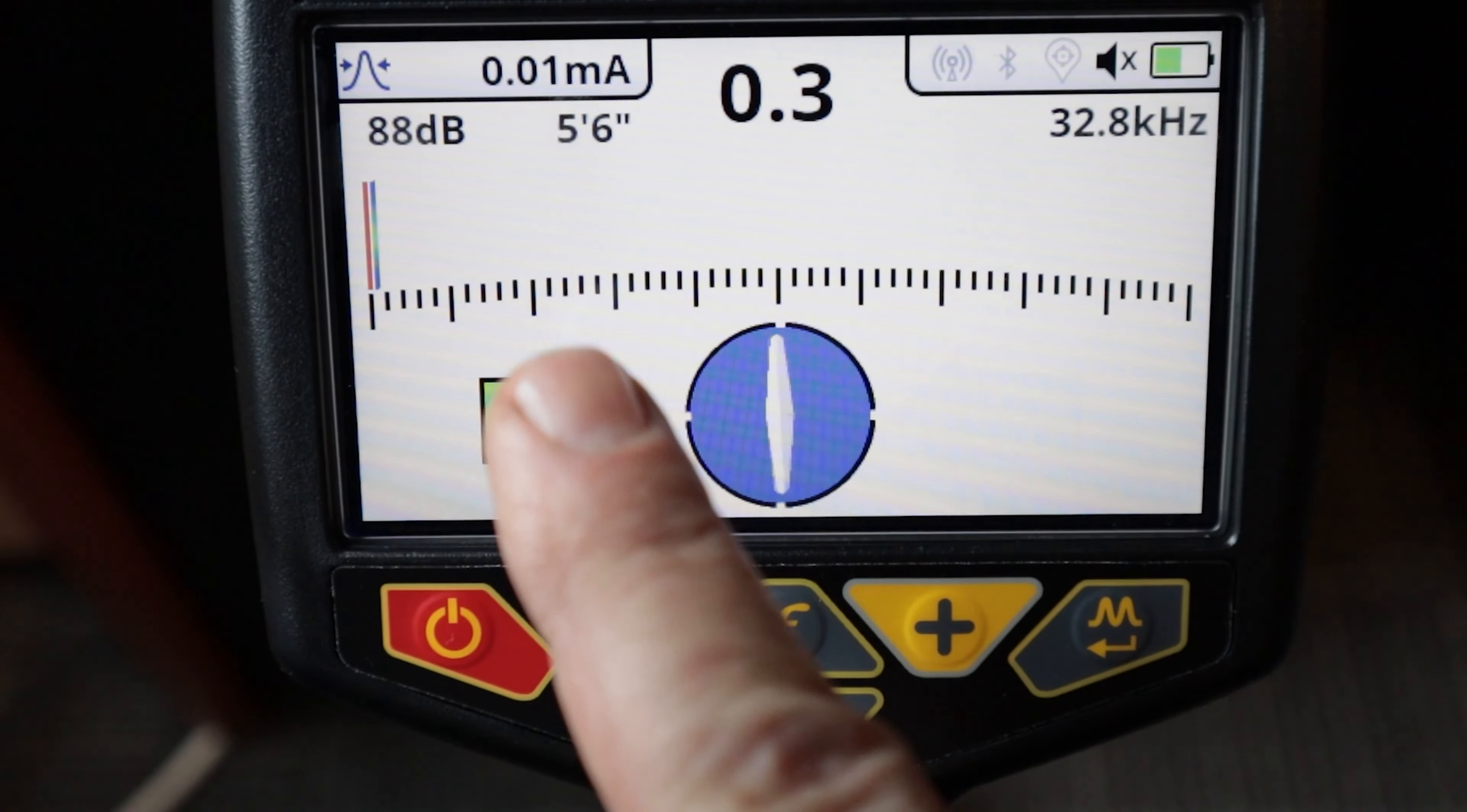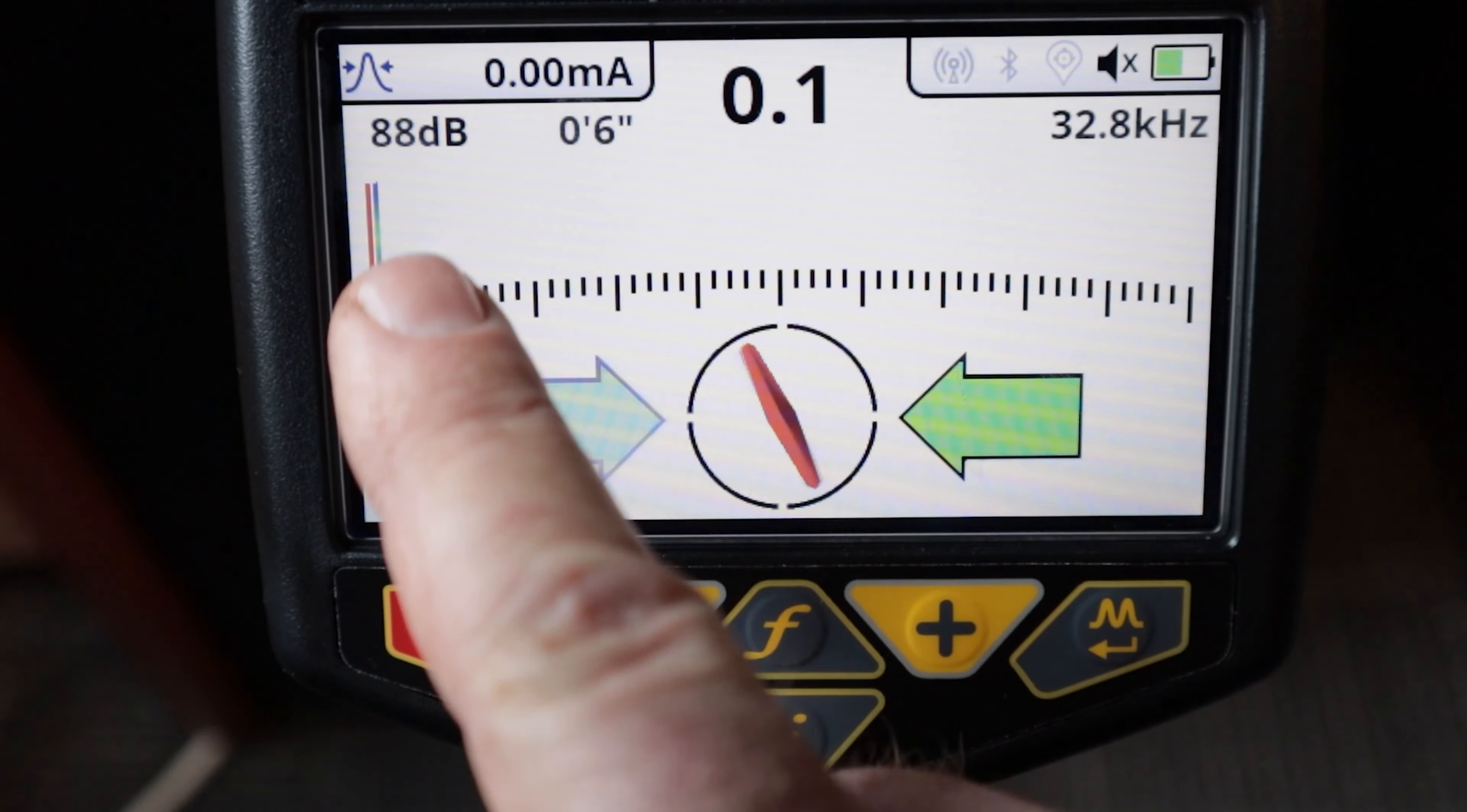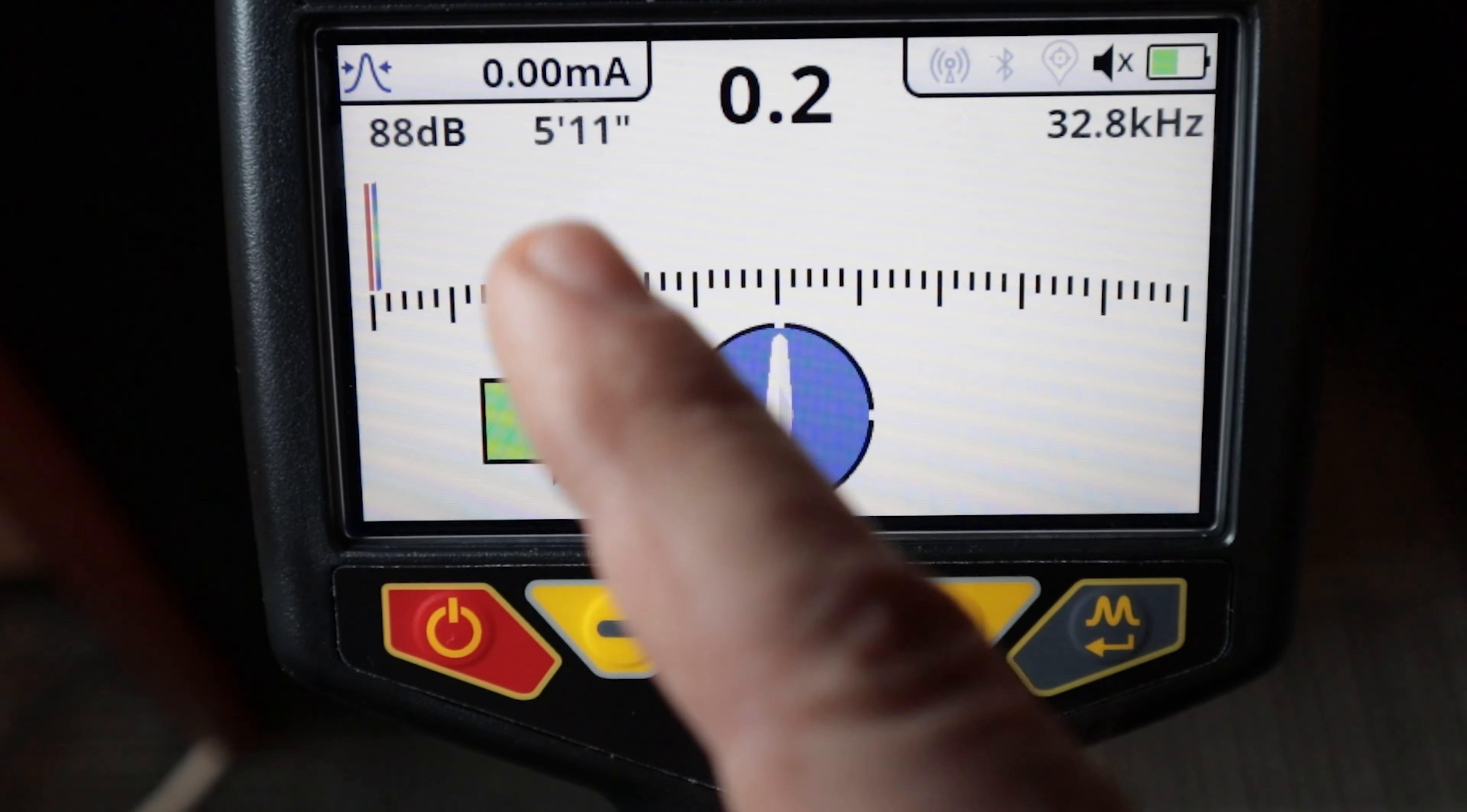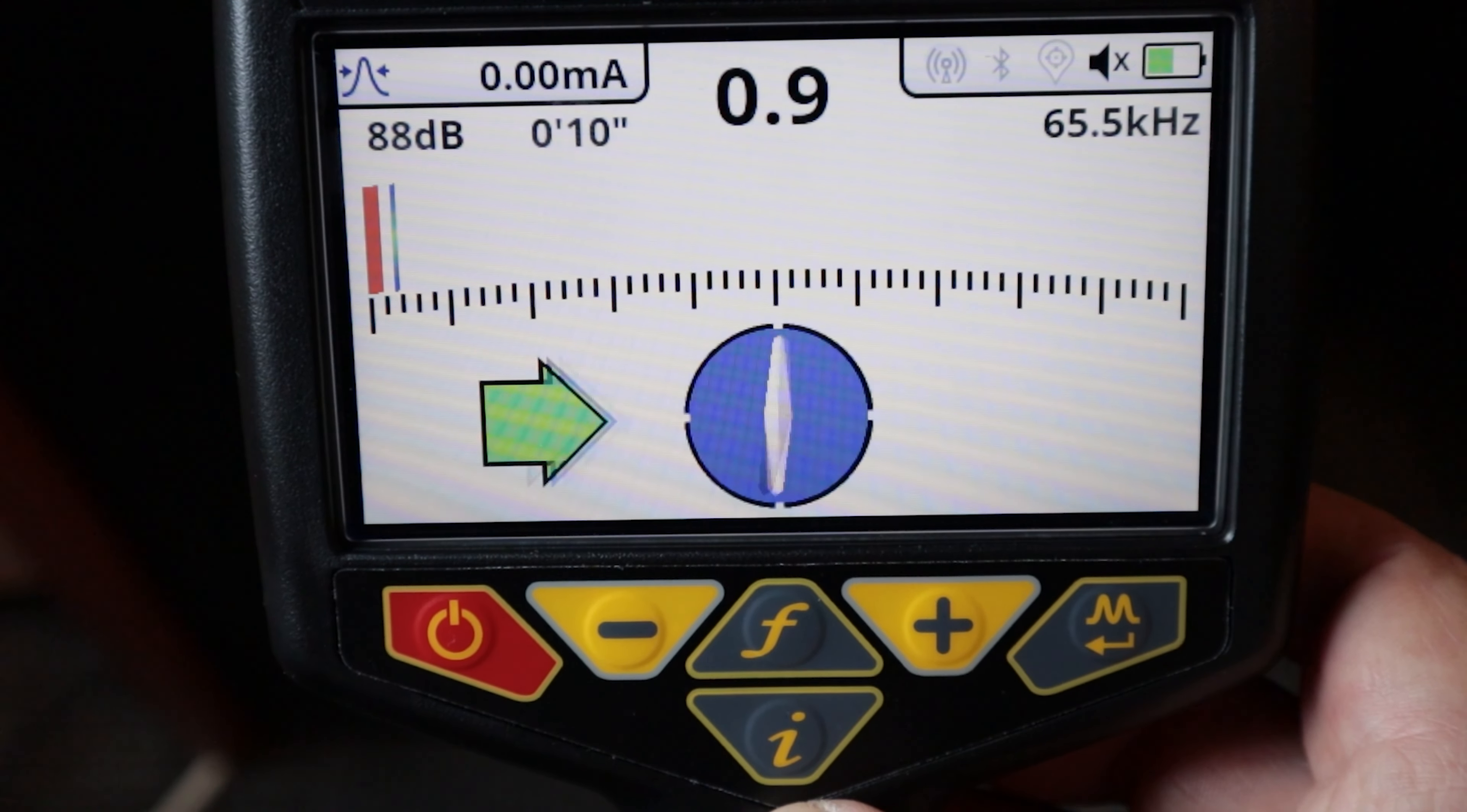Up here is my decibels and that basically is how sensitive I have my coil set to look for the utility that I'm actually trying to find. I don't increase or decrease the actual signal that's being put out, that is referenced by my milliamps. This is just how sensitive I have the coils. An example is if I had something that was quite deep, say six feet deep in the ground, I would need to potentially turn my sensitivity up versus if it was only two feet deep. Next to that is our depth, this is a constant changing depth. Over on the right-hand side we have our frequency.